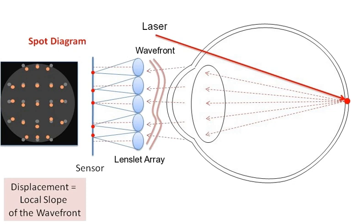A Shack-Hartman or Hartmann-Shack wavefront sensor is an optical instrument used for characterizing an imaging system. It is a wavefront sensor commonly used in adaptive optics systems.